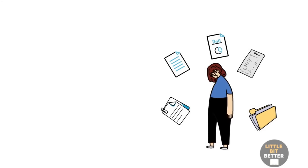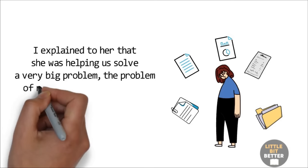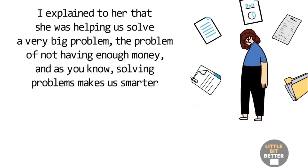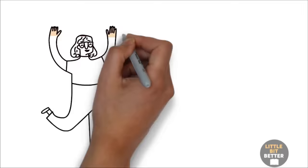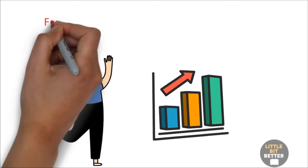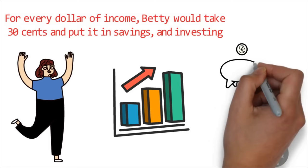I explained to her that she was helping us solve a very big problem. The problem of not having enough money. And as you know, solving problems makes us smarter. When she understood she was actually creating income through expense, she was willing to go along with our plan to create a budget surplus. For every dollar of income, Betty would take 30 cents and put it in savings and investing. She knew that saving and investing were a necessary expense to create a surplus. Our first and most important expense.